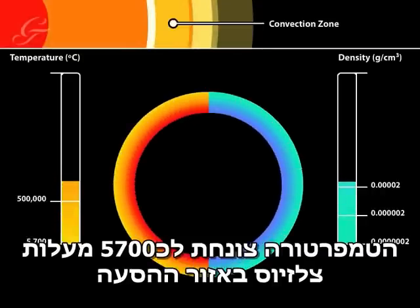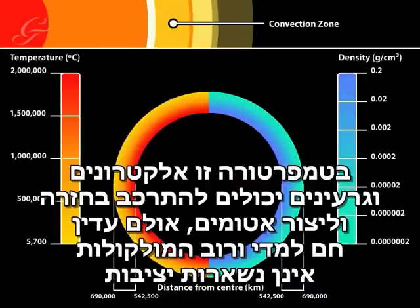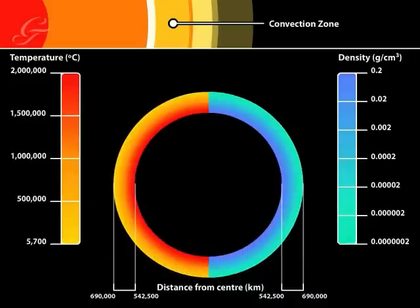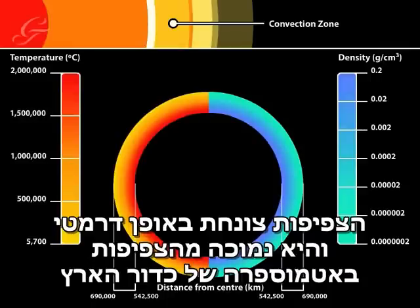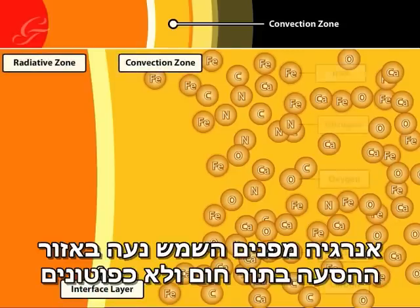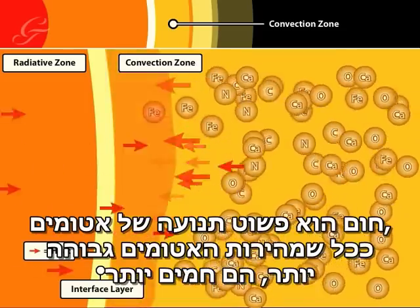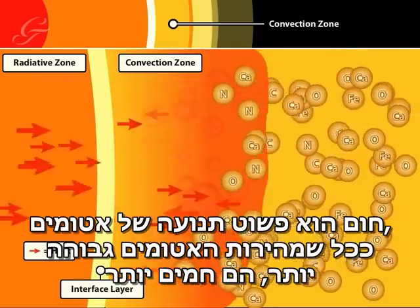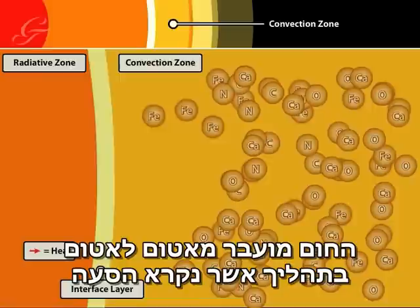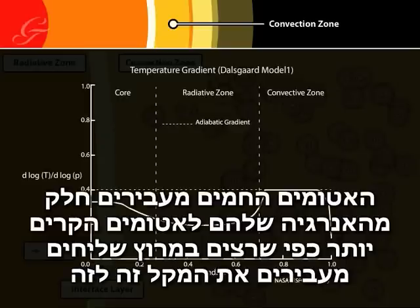The temperature of the convection zone drops to about 5,700 degrees centigrade. At this temperature, electrons and atomic nuclei can start to recombine into atoms, though it is still too hot for the majority of molecules to stay together. The density drops dramatically to greatly below that of the Earth's atmosphere. Energy from the interior of the Sun moves through the convective layer as heat, rather than as photons. Heat is just movement of atoms — the faster the speed, the hotter the atoms. Heat is transferred from atom to atom in a process called convection. Hot atoms hit cooler ones, speeding them up, as if passing the baton in a relay race.